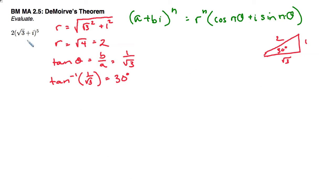Alright, so now to apply De Moivre's theorem. I have the 2 out in front, and then I will use r to the n, so 2 to the 5th power, times cosine of 5 times 30, my angle, plus i sine of 5 times 30, my angle again.